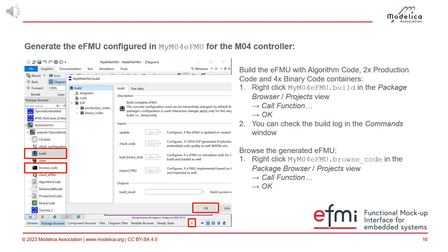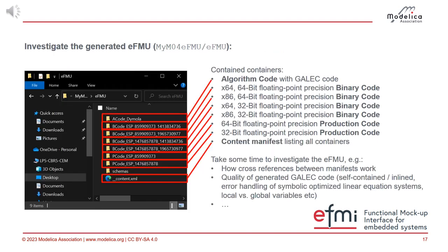That is the objective for the first part of the tutorial. When you look into the EFMU, you see the algorithm code container with the GALIC code, the four binary code containers, the two production code containers with different floating point precisions, and the manifest that references all these containers. You should investigate this a bit — look into the GALIC code and see how it maps to the model, and look into the manifest to see the cross-reference links.